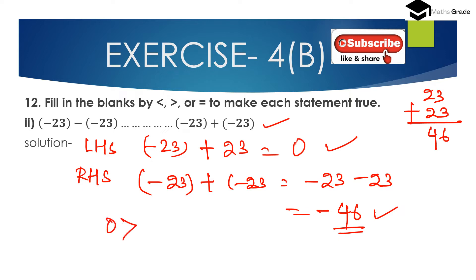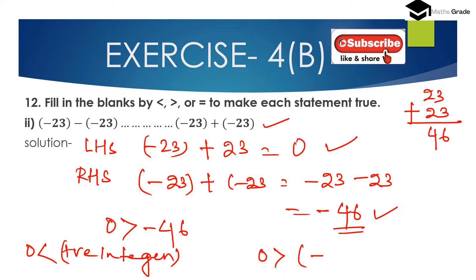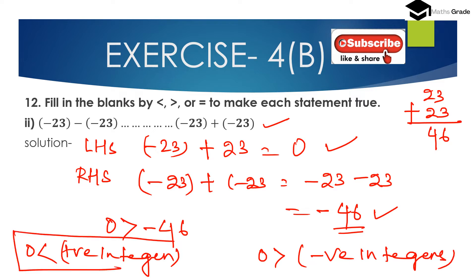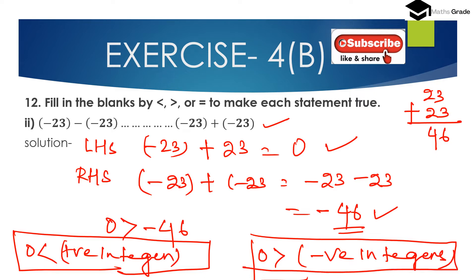We know 0 is always greater than every negative integer, and 0 is less than every positive integer. So 0 is greater than minus 46. We place the greater than symbol: minus 23 minus of minus 23 is greater than minus 23 plus of minus 23.